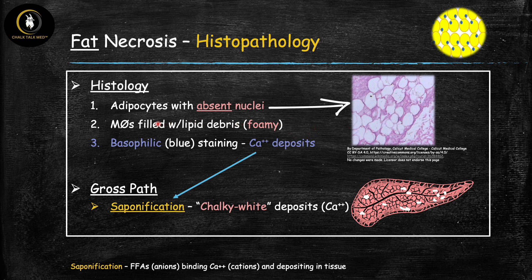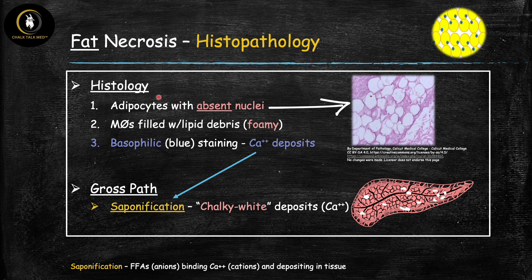Two other important histological findings: first, there will be many macrophages filled with lipid debris from the dead adipocytes, making them appear foamy — these are called foamy macrophages. Macrophages come in to phagocytose the debris. Second, the tissue will show basophilic or blue staining due to saponification: the free fatty acids released are anions — negatively charged — so they bind positively charged calcium, leading to calcification and that blue/basophilic staining of the tissue.